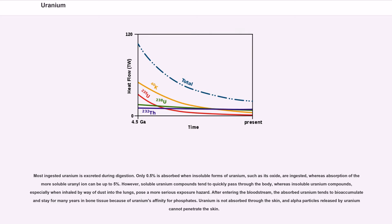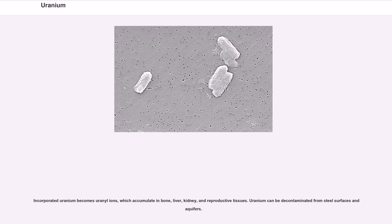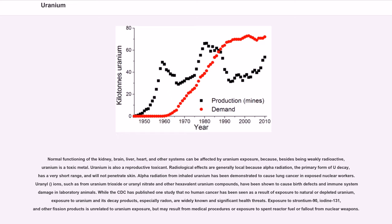After entering the bloodstream, the absorbed uranium tends to bioaccumulate and stay for many years in bone tissue because of uranium's affinity for phosphates. Uranium is not absorbed through the skin, and alpha particles released by uranium cannot penetrate the skin. Incorporated uranium becomes uranyl ions, which accumulate in bone, liver, kidney, and reproductive tissues. Uranium can be decontaminated from steel surfaces and aquifers. Normal functioning of the kidney, brain, liver, heart, and other systems can be affected by uranium exposure, because, besides being weakly radioactive, uranium is a toxic metal. Uranium is also a reproductive toxicant. Radiological effects are generally local because alpha radiation, the primary form of U-decay, has a very short range and will not penetrate skin.